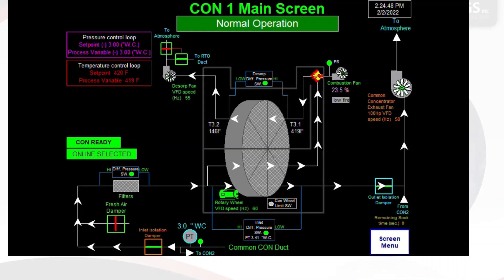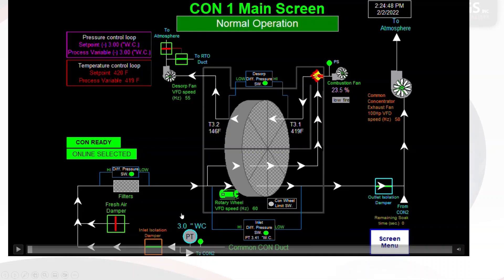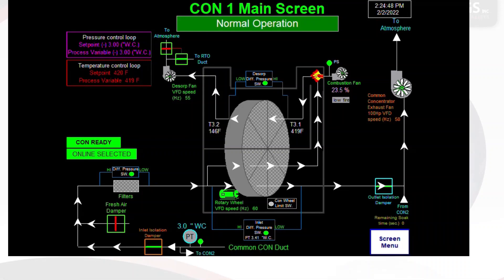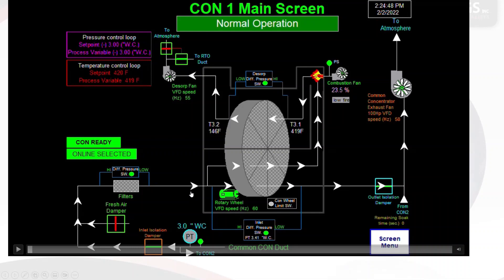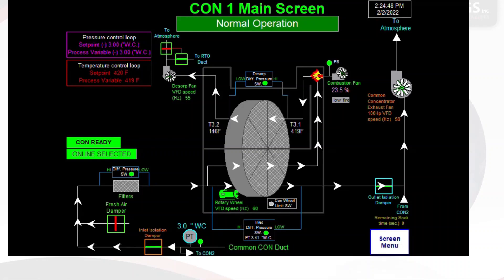A VOC concentrator takes airstreams that have very dilute amounts of VOCs in the airstream, and airstreams that are ambient temperature or cooler, and those are the perfect applications for a VOC concentrator. The type of VOC is important as well. It can't be a condensable VOC, it can't be certain types of alcohols that don't absorb well onto the wheel. We'll talk about that a little bit later, but let's look at the operation of it.